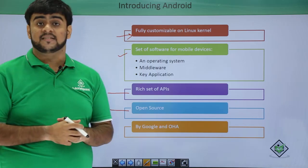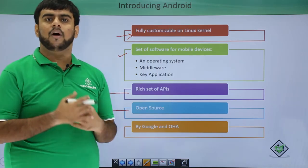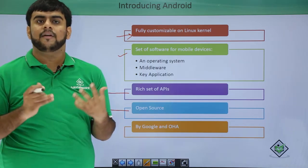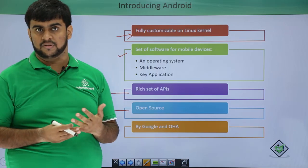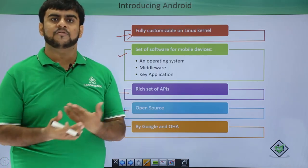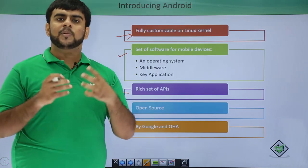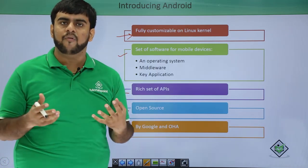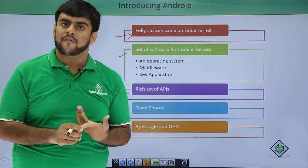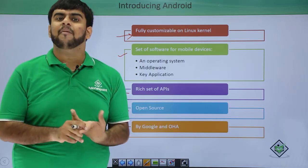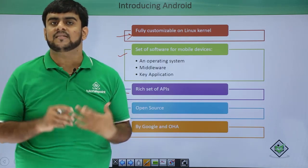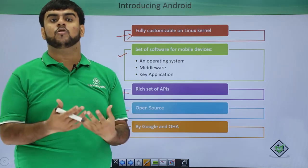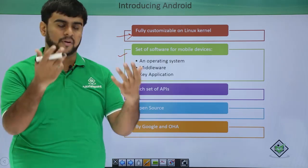The next point is open sourceness. Now, what is open source? We have heard Android is open source, we have heard Linux is open source. But what does the word open source mean? Open source is nothing but a software that is available free of cost and can be customized — it is an open source operating system or open source software.